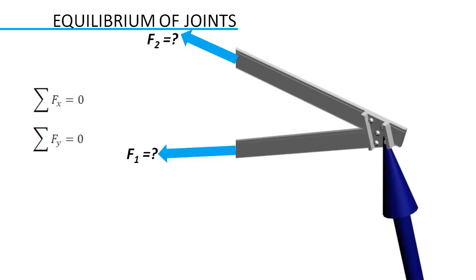Please note that we cannot use equilibrium of moment at a joint because moment produced by member forces in a joint is zero, since all forces are passing through the same point.